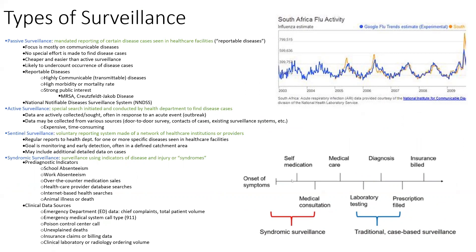Surveillance helps us determine how many cases we have of each disease. Passive surveillance is where public health agencies mandate reporting of disease cases a physician sees — common for diseases of strong public interest like COVID-19, measles, or Creutzfeldt-Jakob disease. The National Notifiable Disease Surveillance System is a great resource for this data. Active surveillance is a special, sometimes door-to-door search for cases. Sentinel surveillance is voluntary reporting, often used in studies.